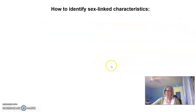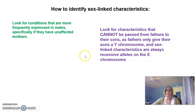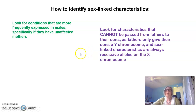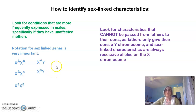How do we identify sex-linked characteristics? Look for conditions more frequently expressed in males — specifically those with unaffected mothers. Look for characteristics that cannot be passed from fathers to their sons, as fathers only give their sons a Y chromosome and sex-linked characteristics are always recessive alleles on the X chromosome. The notation for sex-linked genes is very important: females can have three possible genotypes, while males can only have two, and males cannot be heterozygous for a sex-linked condition.